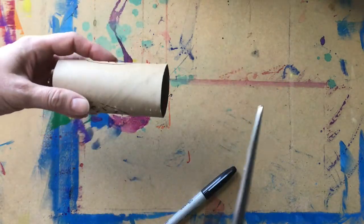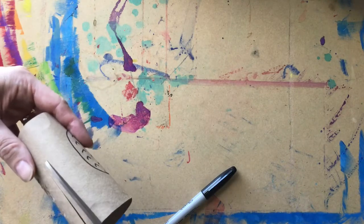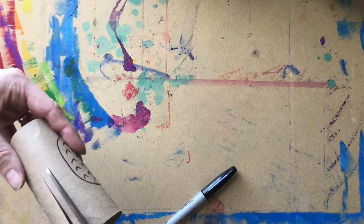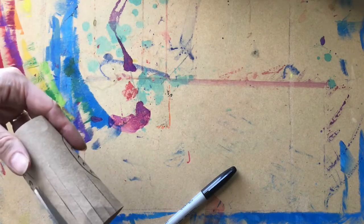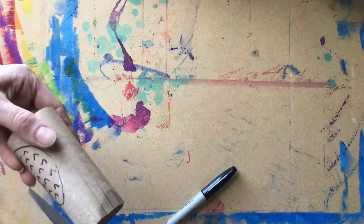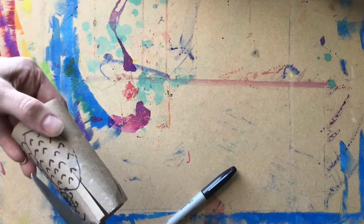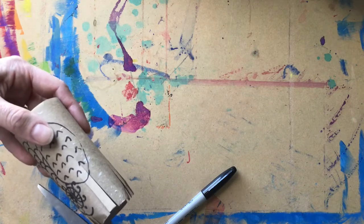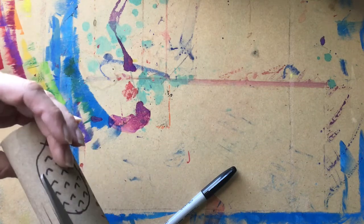One creature that I think is pretty cool that you can make is a hedgehog. So to make my hedgehog I would simply cut a fringe around my tube, and this fringe is going to become the quills for my hedgehog.